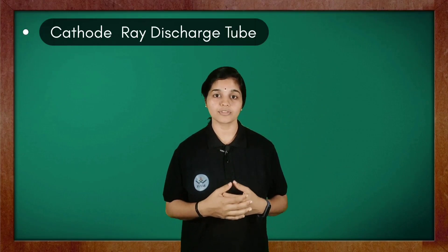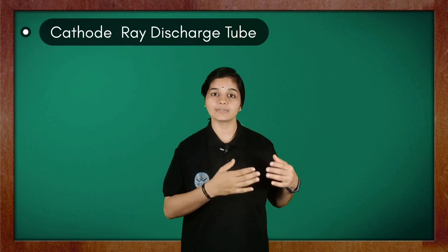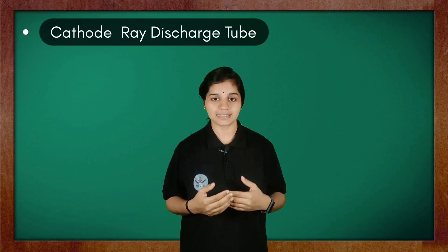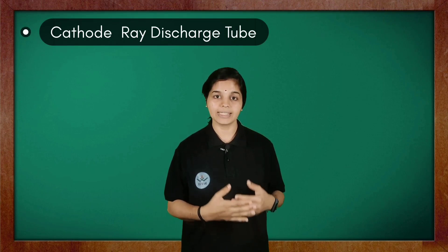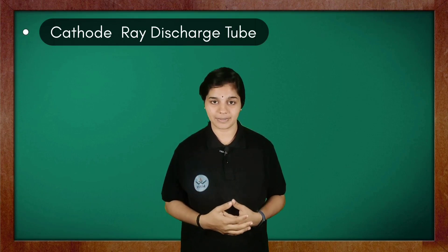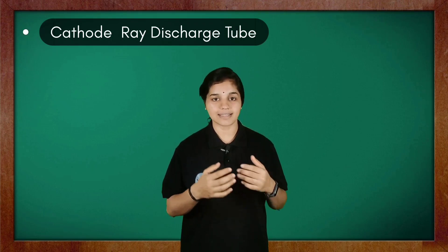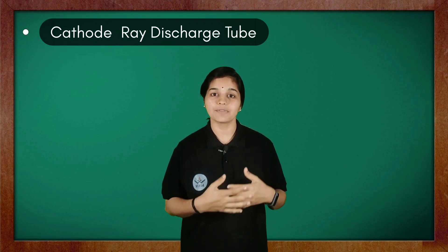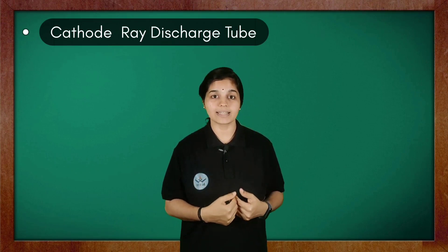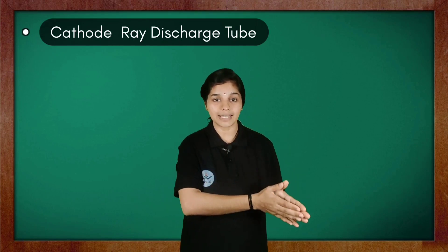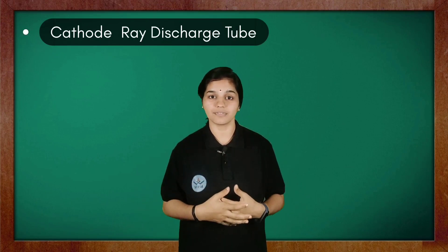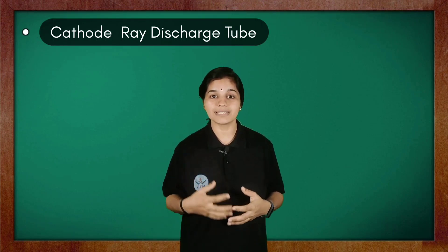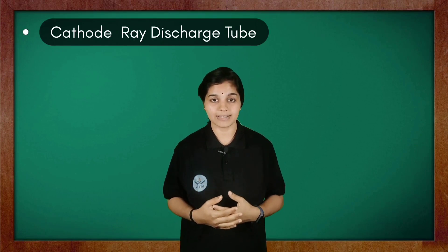From this experiment, it was concluded that cathode rays travel from cathode to the anode. In the absence of electric as well as magnetic field, these rays travel in a straight line. Since these cathode rays are traveling from the negative cathode to the positive anode, we can tell that these cathode rays consist of negatively charged particles. Hence, they are named as electrons.